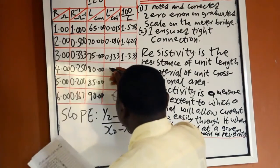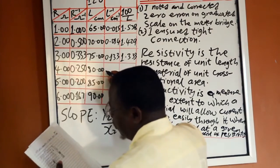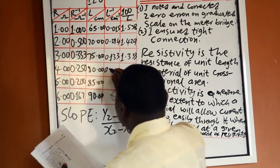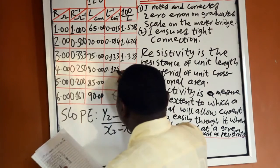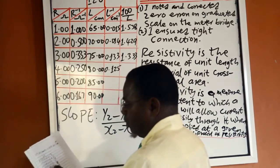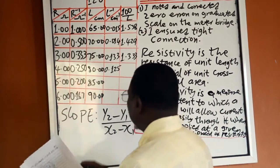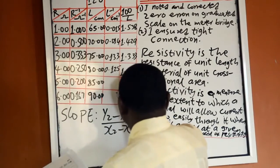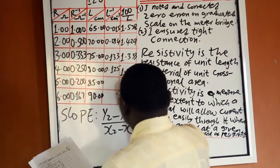1 over 80 is equal to 0.0125, and 100 over 80 is equal to 1.250.